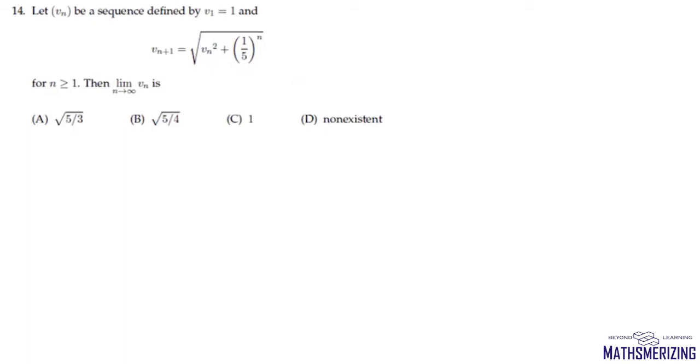The question is: let vₙ be a sequence defined by v₁ equals 1 and vₙ₊₁ equals the square root of vₙ² plus 1 by 5 to the power n. We need to find the limit as n tends to infinity of vₙ.